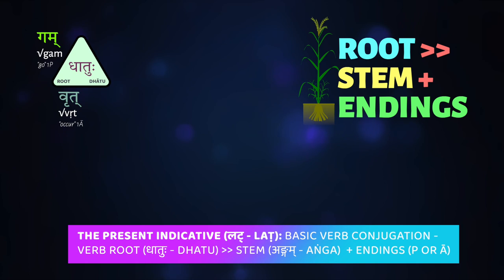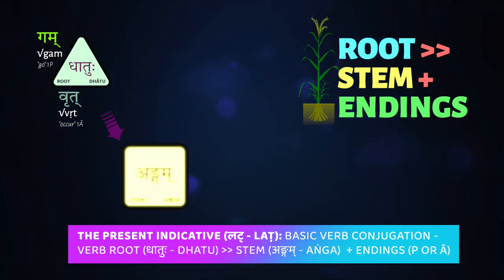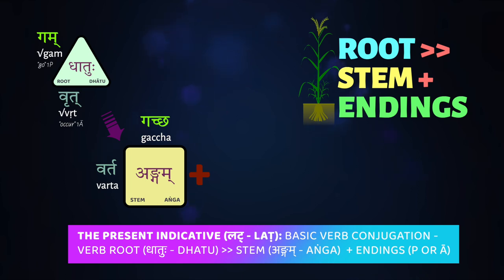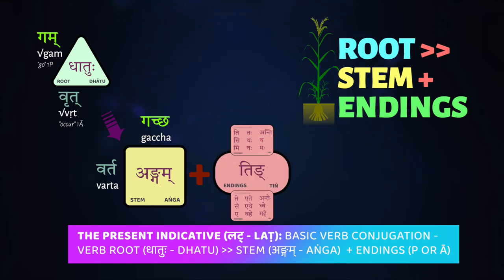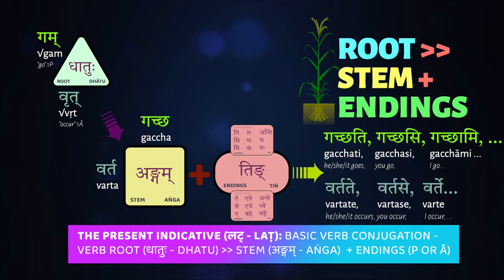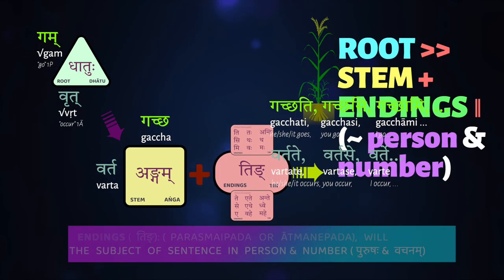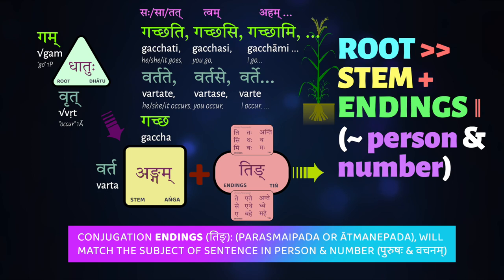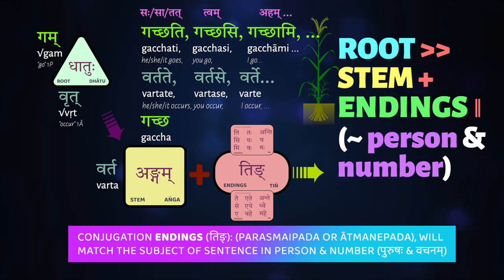It all starts with verb roots — these dhātus — which get turned into stems. To those stems you add either parasmaipada or ātmanepada endings, which are like leaves and flowers on a plant. These endings have to match the subject of the sentence, the noun found in the nominative case, in the prathamā vibhakti, and it has to match in terms of person and number — puruṣa and vacana in Sanskrit.